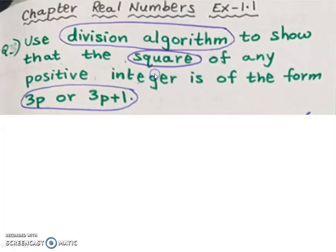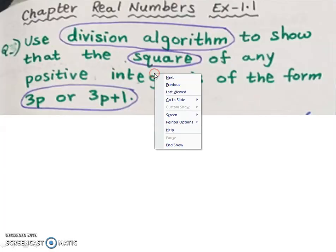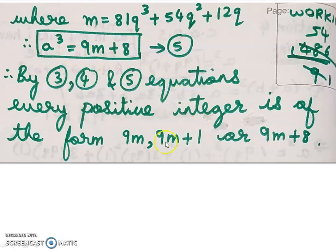From all three cases, we can conclude that the cube of every positive integer is of the form 9m, 9m plus 1, or 9m plus 8.